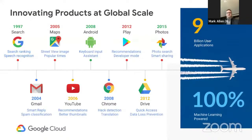You'll see a great timeline and history of the major products that Google has released. We've been in the consumer space since before 1997, and each of these applications has a billion users. Two of them actually have two billion users, and notably all of them are 100% powered by machine learning. There are at least two machine learning-powered features for each application. I guarantee if you have children, they're using YouTube — we've used machine learning to improve thumbnails, recommendations, and the algorithm.